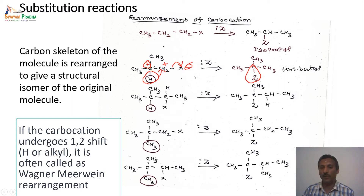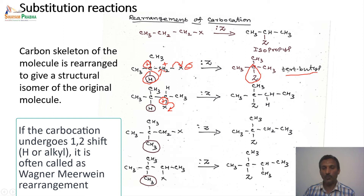A rearrangement leads to the tertiary butyl derivative, as shown here. In this case, the X group is attached to the second carbon. The X group leaves, giving a carbocation. This hydrogen moves from the neighboring carbon, which has a proton and a methyl group, while the other carbon has two methyl groups. The carbocation can be stabilized by the plus-I effect of two methyl groups versus only one, so this carbocation undergoes rearrangement very effectively. After rearrangement, the Z group attacks the carbocation to form the product.